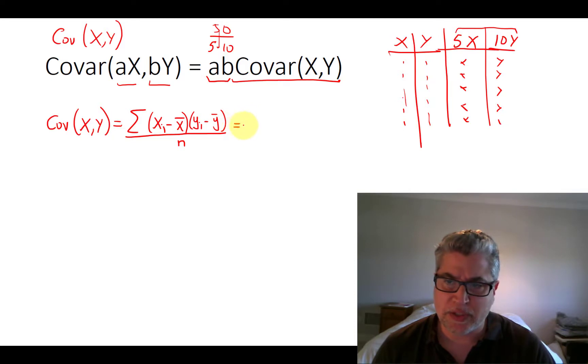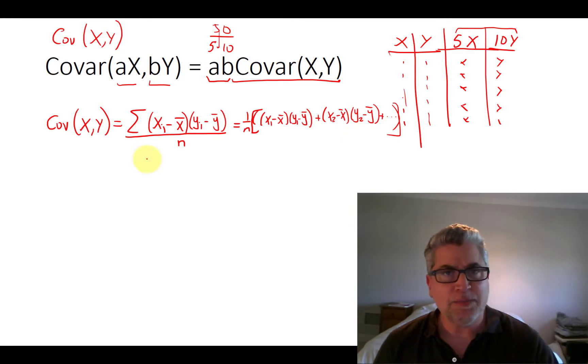So to expand on that, we would have 1 over N, and then we'd have X1 minus X bar Y1 minus Y bar plus X2 minus X bar Y2 minus Y bar, and so forth.